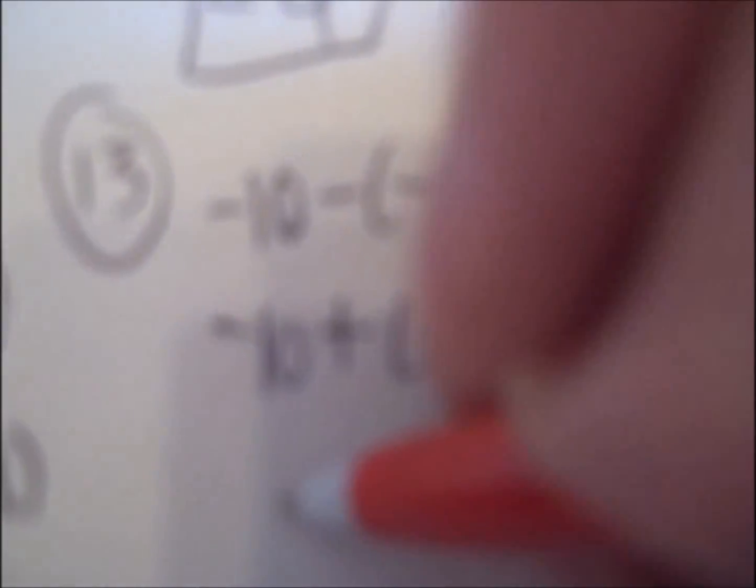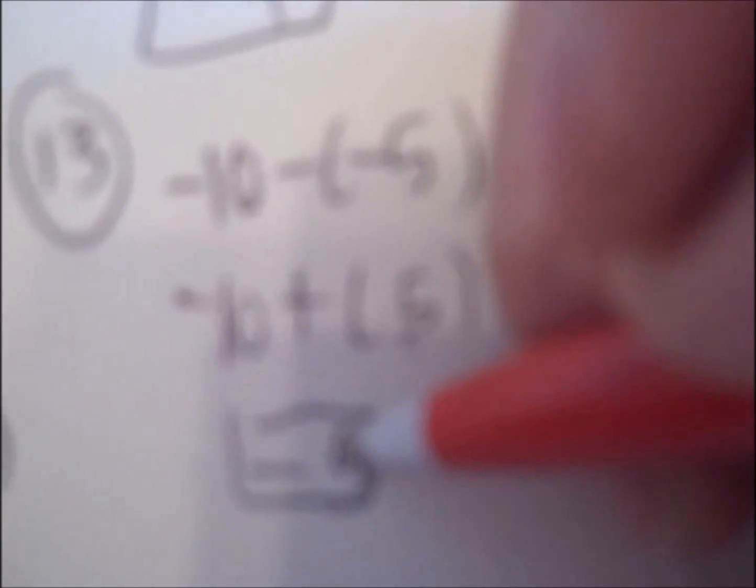Now here, negative 10 minus negative 5. Add the opposite. The opposite of negative 5 is positive 5. Negative 10 plus 5. First, they're opposite signs. Negative 10 plus 5 will give you negative 5, because the bigger number, 10, is negative. My answer should be negative. The difference between 10 and 5 is 5. That's how I get the number. The sign is the one with the bigger number, negative 5. From negative 10 minus negative 5, middle step and answer, negative 5.